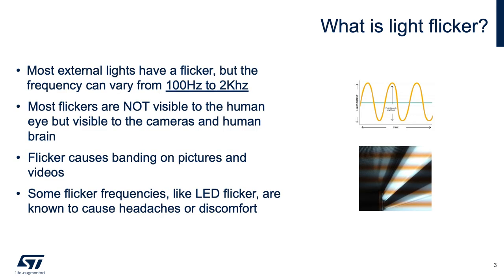Most lights have a flicker, which some are intentional and some come from the power supplies. Flicker frequency can vary from 100 Hz to 2 kHz. Incandescent, halogen, and fluorescent light bulbs flicker at 120 Hz in the US due to AC power supplies at 60 Hz. LED lights, however, use flicker to dim or brighten the light source depending on the design. The flicker is not visible to the human eye but very visible to cameras, producing lines on the picture which is called the banding effect.